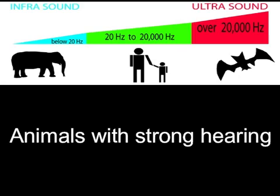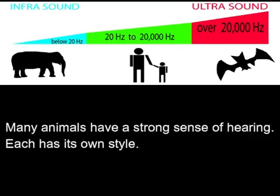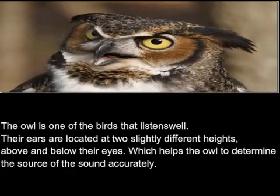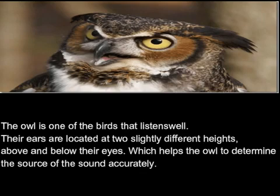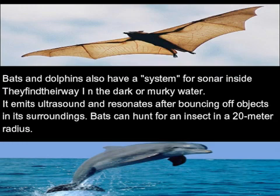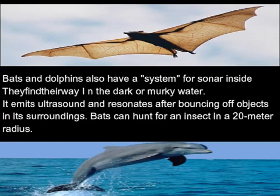Many animals have a strong sense of hearing, each with its own style. The owl is one bird that listens particularly well — its ears are located at two slightly different heights above and below its eyes, which helps the owl determine the source of sound accurately. Bats and dolphins also have a sonar system; they emit ultrasound that resonates after bouncing off objects in their surroundings, allowing bats to hunt for insects within a 20-meter radius.